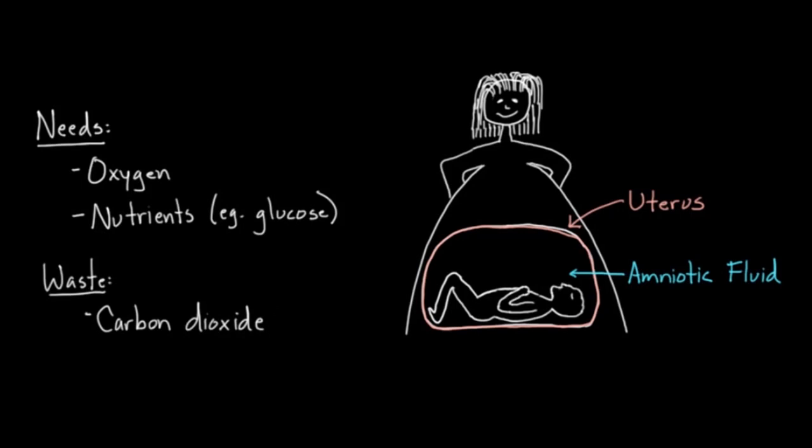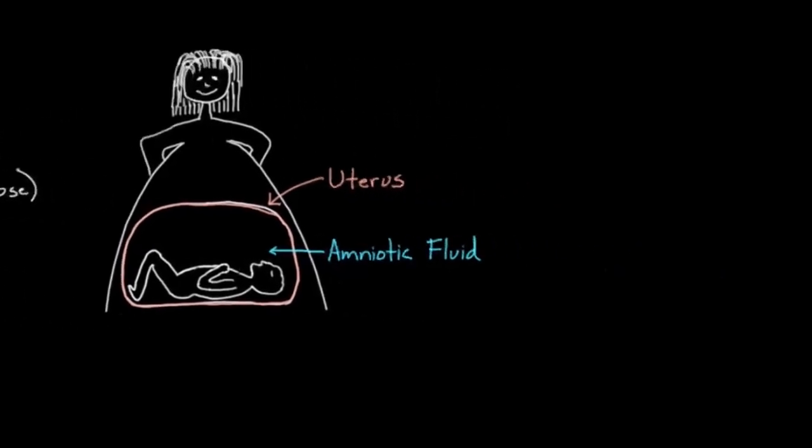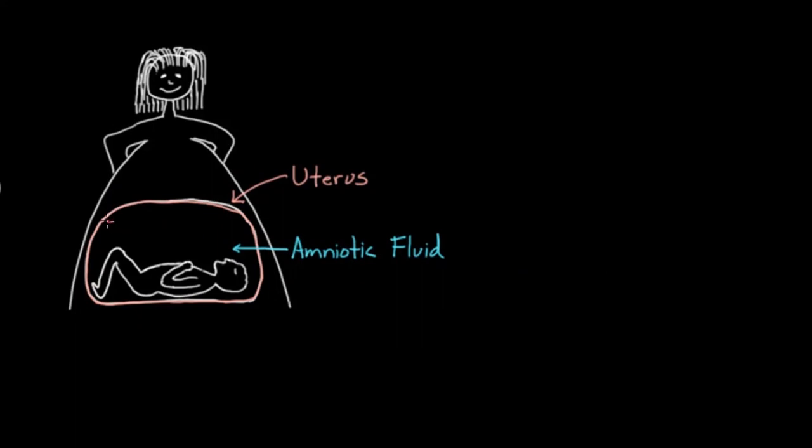And it turns out all of these kinds of issues are obviously very important. And the mom and the baby kind of work together a solution. And this is the first kind of chance for mom and baby to really work together on something. And the solution is something called the placenta.